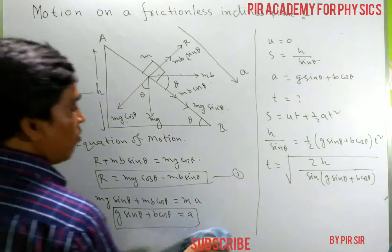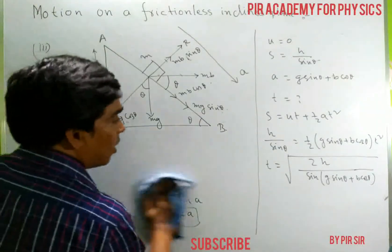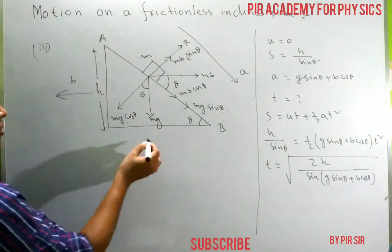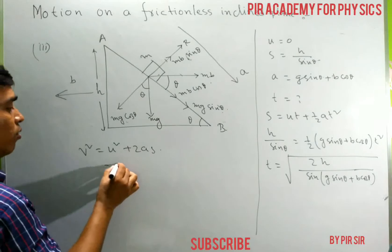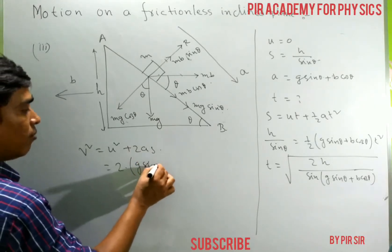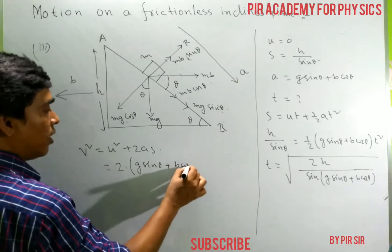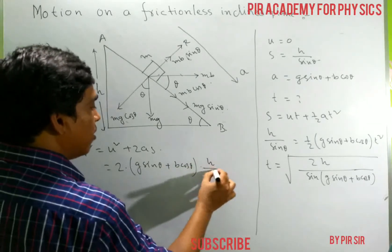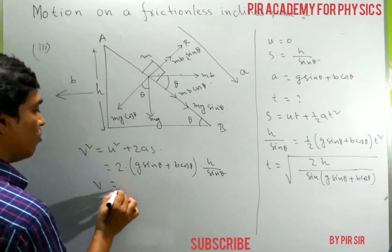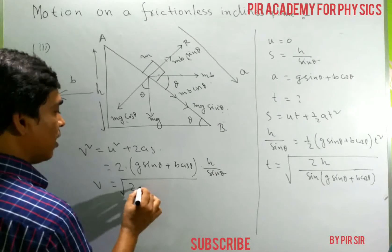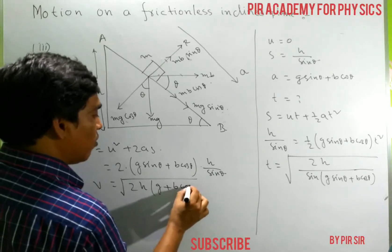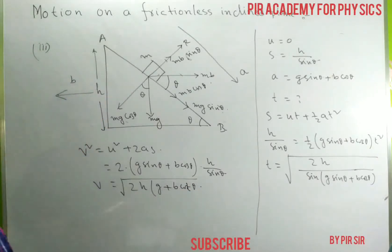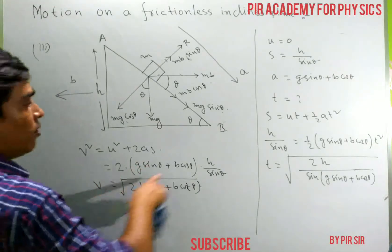The velocity at point B for case three: using V² = U² + 2AS with U = 0, A = g sin theta + B cos theta, and S = H/sin theta, V² = 2(g sin theta + B cos theta)(H/sin theta). The sin theta cancels, giving V equals the square root of 2H(g + B cot theta).